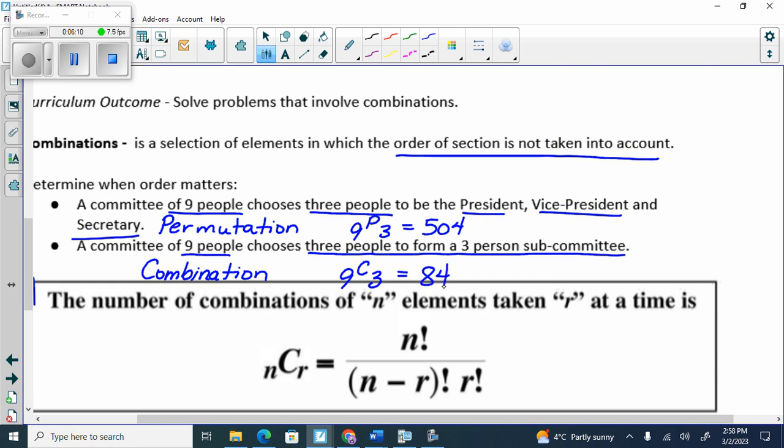And it would be 9C3, which is how many? 84. It's way less. Why? The order doesn't matter. So I pick those three. If I take them and flip them, then this, then that, it doesn't mean anything. It's all good to be part of the thing, right? So it takes away all those cases where order matters, which substantially drops it down.